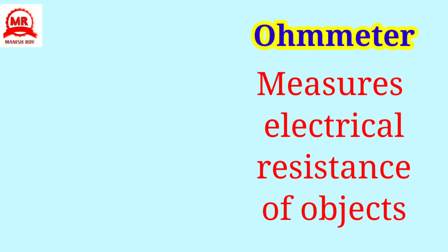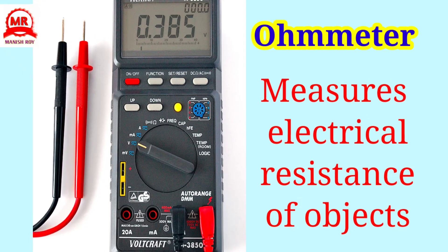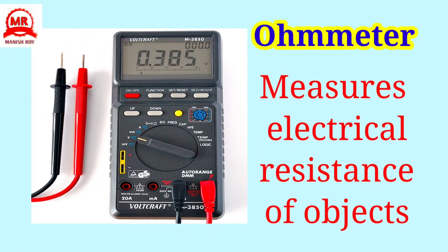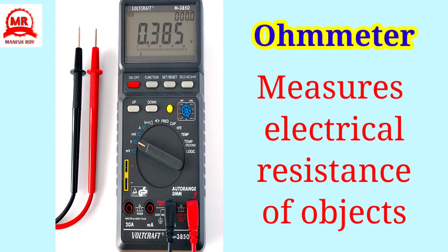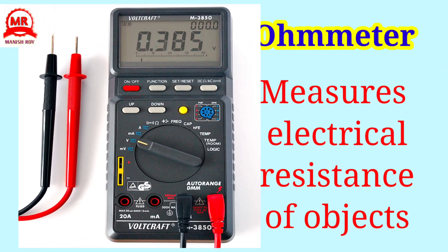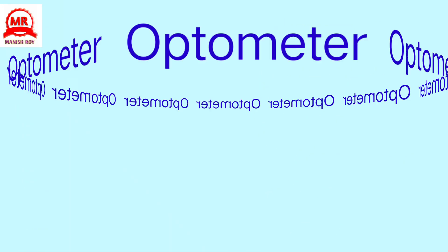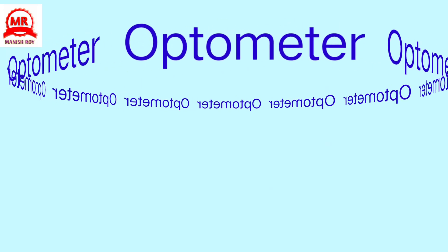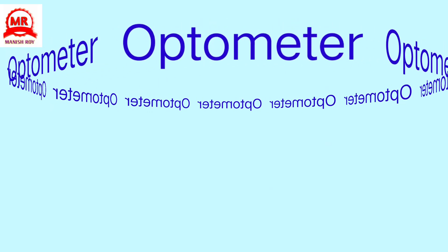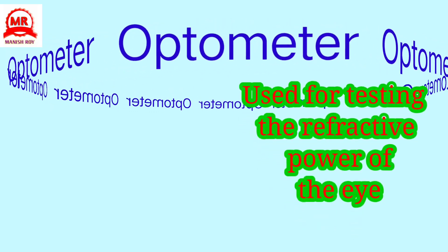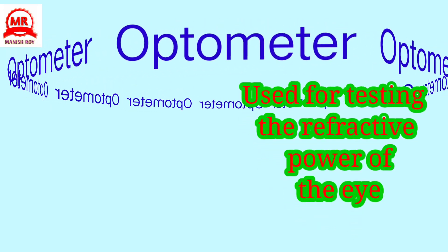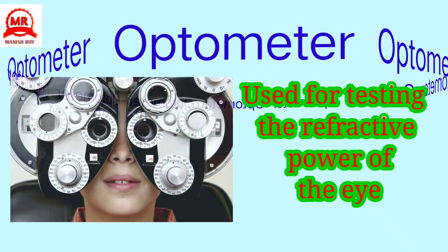Ohmmeter: measures electrical resistance of objects. Optometer: used for testing the refractive power of the eye.